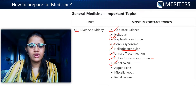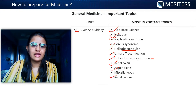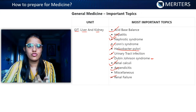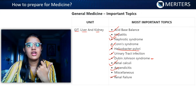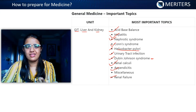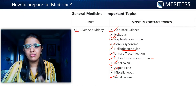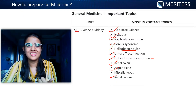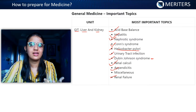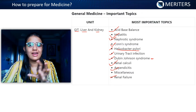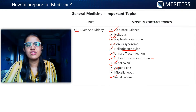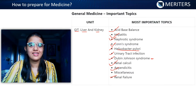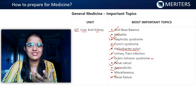Next is renal stone, then appendicitis. For renal failure, it's important to know what are the causes of renal failure, what are the drugs that can be used in case of renal failure, along with the signs and symptoms that indicate the liver is failing. The most important sign is, of course, edema.